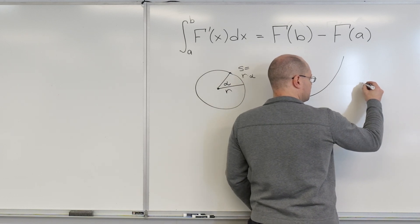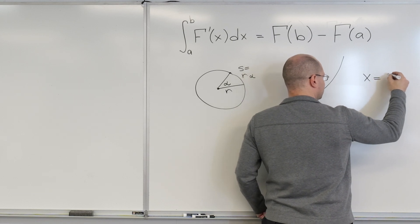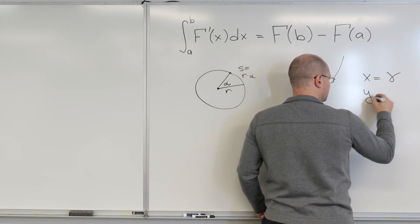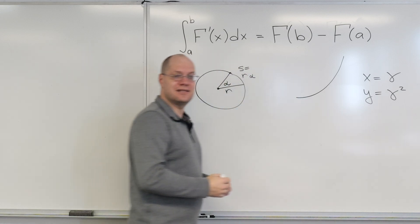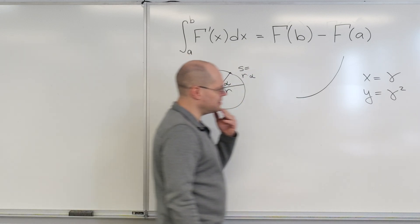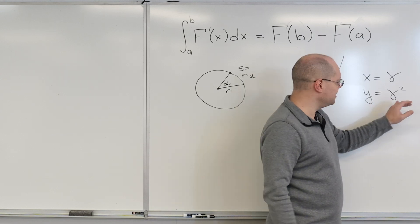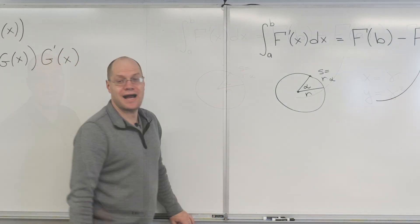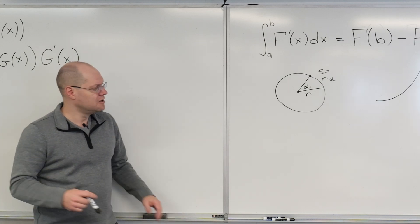We would just want to parametrize it by saying that X equals gamma and Y equals gamma squared. That's very nice and simple. And I'll show you that if we try doing it with S, the arc length, these expressions would be crazy. So it's not practical. Using the arc length parameter is not practical.